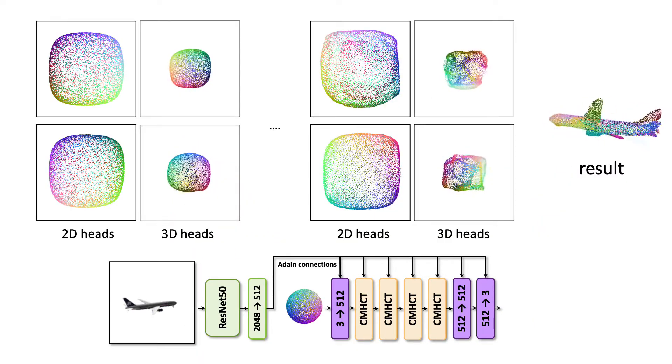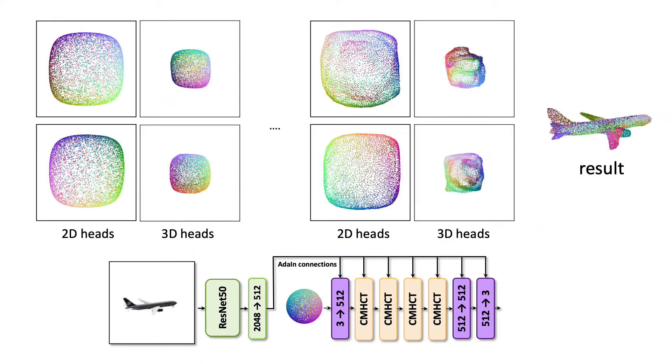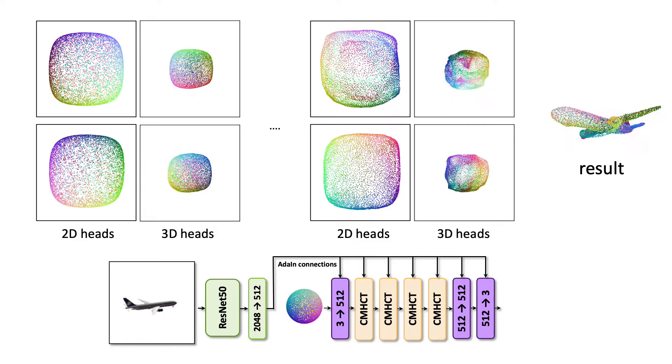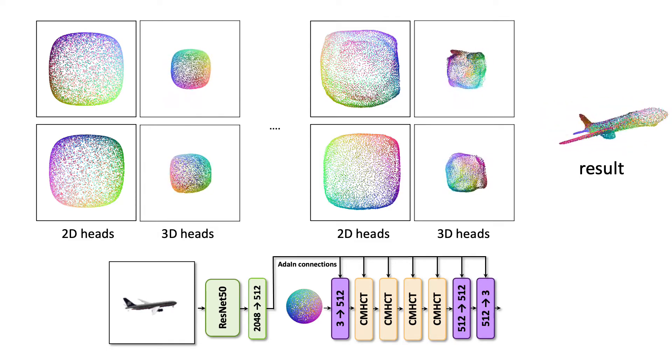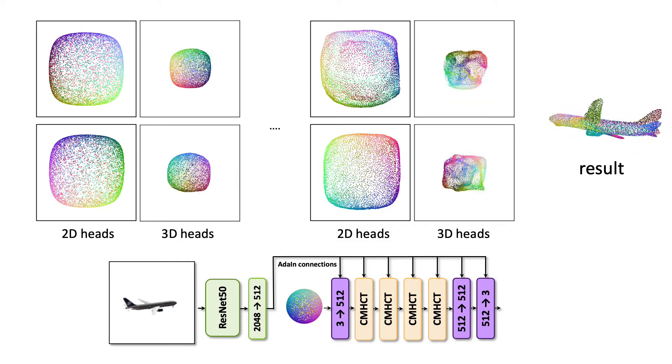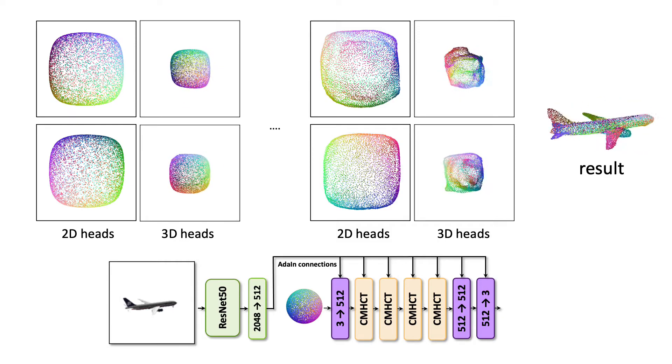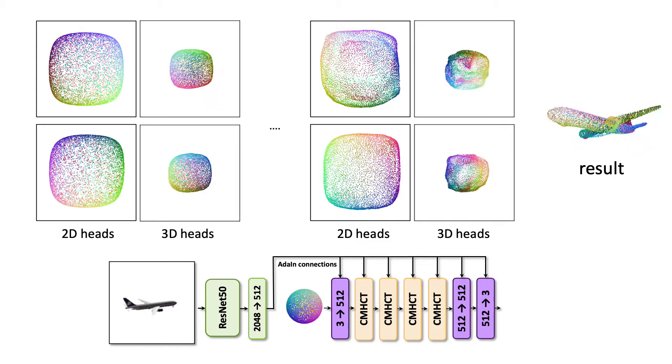Here, for one input, we visualize how a sphere is progressively morphed into the result. On the left, we show the cloud rasterized by four heads within one of the first layers. In the middle, we show the visualization of four heads in the penultimate layer. On the right, we show the reconstruction result.